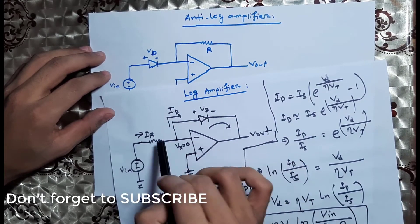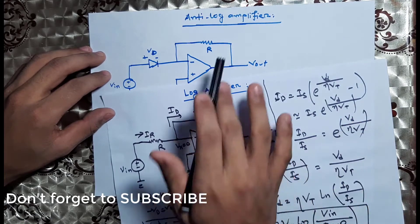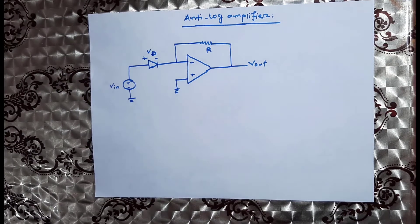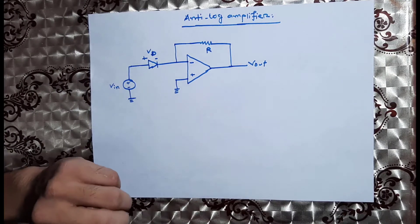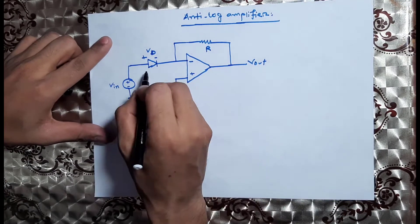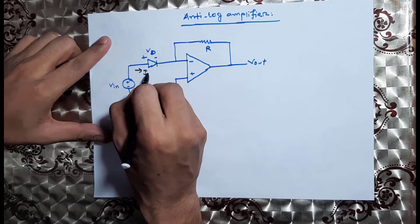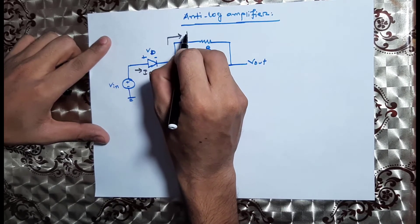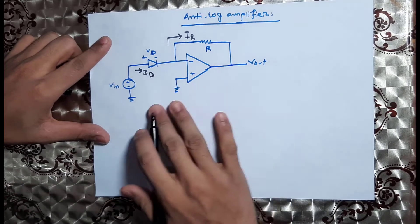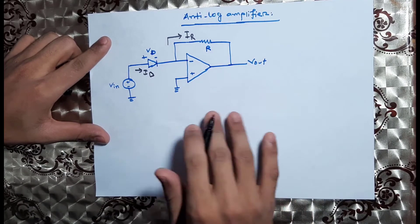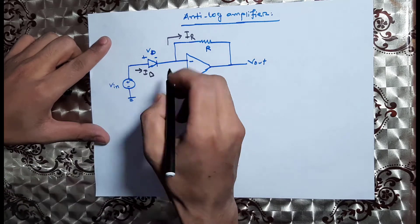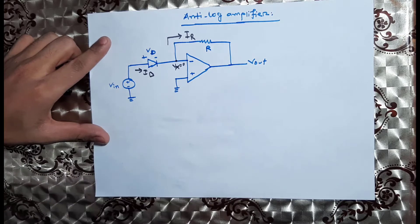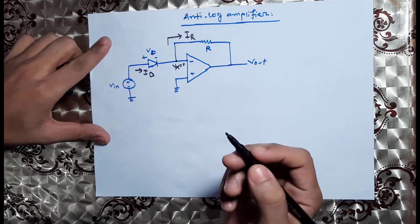Then we will use the diode to take the diode equation. Here we use the diode for the log amplifier, and we need to use the diode in band mode.